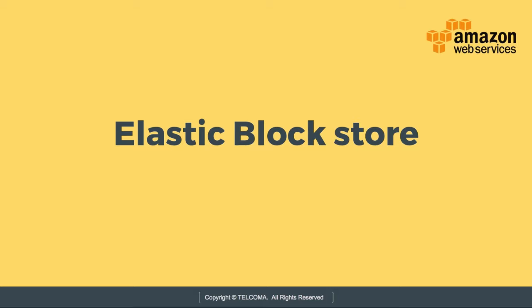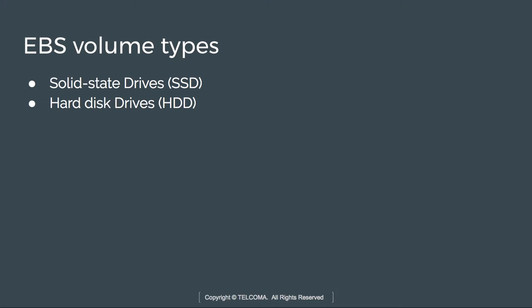Welcome to the class on Elastic Block Store. Today we will continue with EBS volume types. We have two types of volumes: solid state drives (SSD) and hard disk drives (HDD). A solid state device is a solid state storage device that uses integrated circuits as memory to store data persistently.